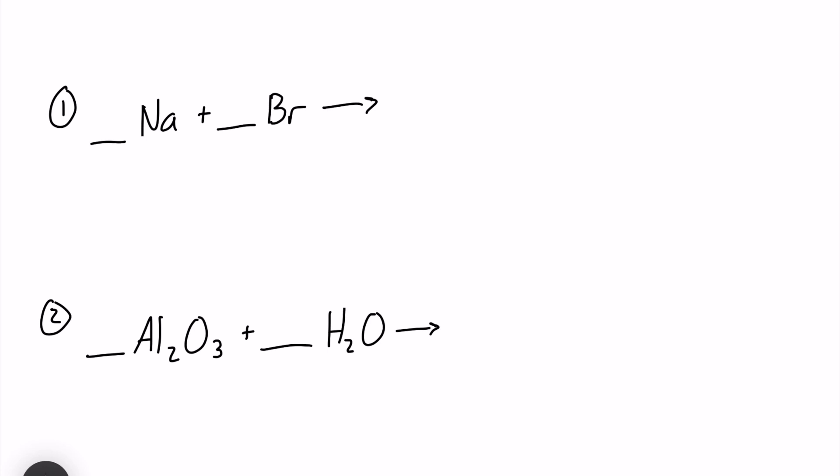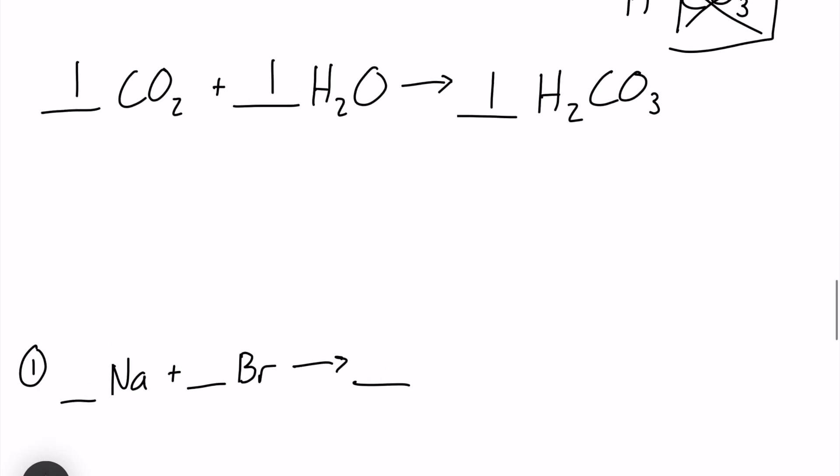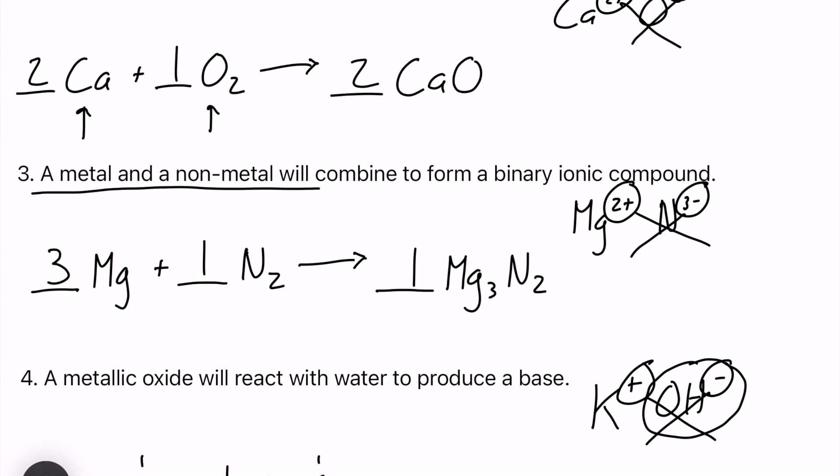We're moving on to the three examples where we need to pick the rule and come up with the product and finally balance it. The first one, we have sodium and bromine reacting together. Let's pick out a rule. Remember, we have a metal and a non-metal. Let's scroll up and find one. I'm going to say this relates to rule number three here. It says a metal and a non-metal will combine to form a binary ionic compound.